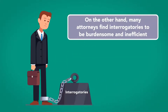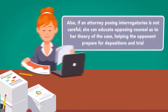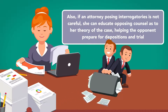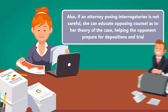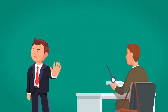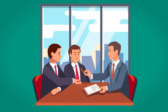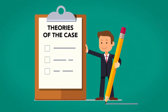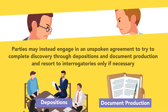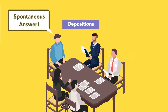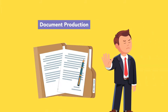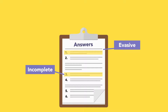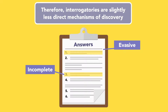On the other hand, many attorneys find interrogatories to be burdensome and inefficient. Also, if an attorney posing interrogatories is not careful, she can educate opposing counsel as to her theory of the case, helping the opponent prepare for depositions and trial. Parties may also avoid posing interrogatories because they invite the other party to also submit interrogatories, as interrogatories are burdensome to answer and may force parties to commit to theories of the case and make strategic decisions early in the discovery process. Parties may instead engage in unspoken agreements to complete discovery through depositions and document production, resorting to interrogatories only if necessary. Moreover, while depositions require spontaneous answers and requests for production are not easily avoidable, interrogatories can often be answered evasively or incompletely. Therefore, interrogatories are slightly less direct mechanisms of discovery.